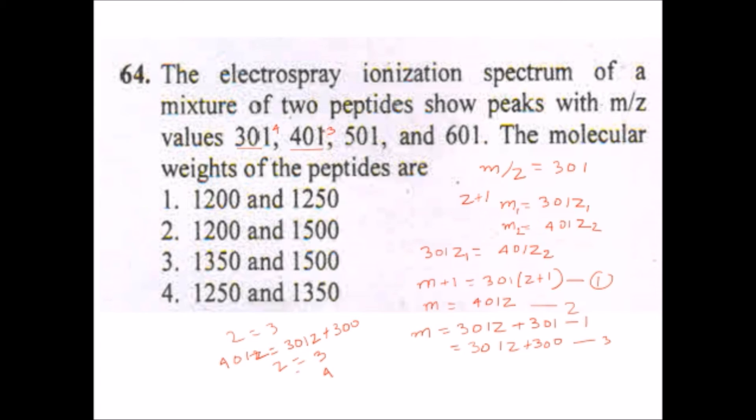And when we calculate this, we will get the value of z as 3. So the charge associated with this mass 401z is 3, and the charge associated with m plus 1 or 301 is z plus 1, equals to 4. So for 401 it is 3 and for 301 it is 4. So the mass for 401 and mass for 301 will be equal.